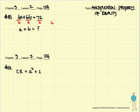Let's see if we can rewrite this. We have 6a over 6 plus 6b over 6 is equal to 72 over 6.